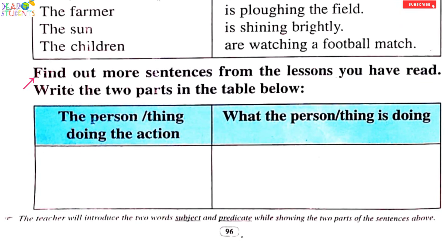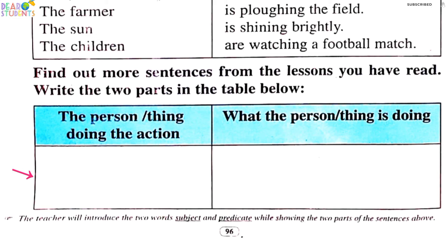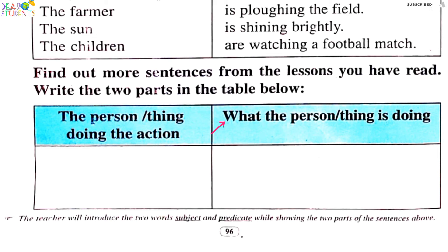Find out more sentences from the lesson. You have read the two parts of a sentence. Write the two parts in the table — the subject and the action the person or thing is doing.